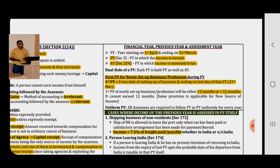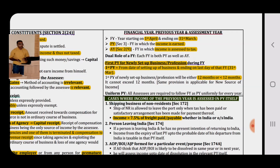Definitions: Financial Year generally runs from 1st April to 31st March. Previous Year is the income-earning year. Assessment Year is the financial year in which income is assessed to tax. For existing businesses, the previous year always runs from 1st April to 31st March. For newly set up businesses, the previous year starts from the date of setting up the business and ends on 31st March of that financial year. So the previous year can be less than or equal to 12 months.